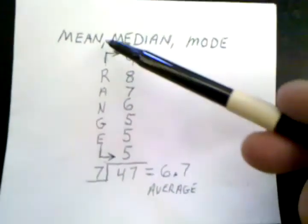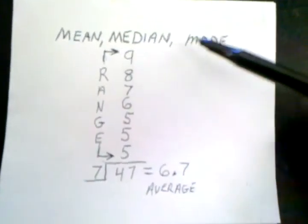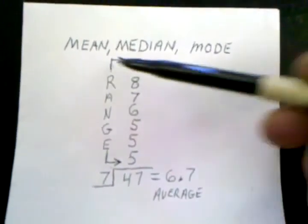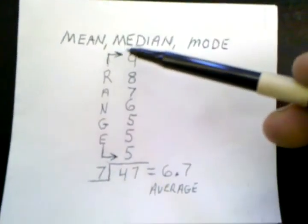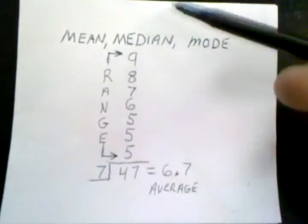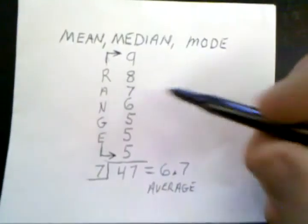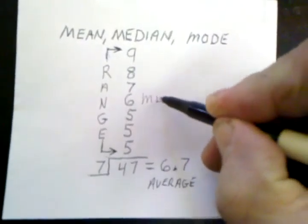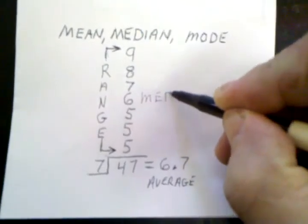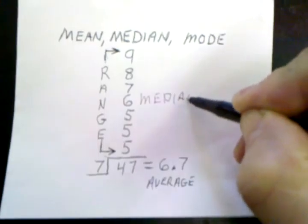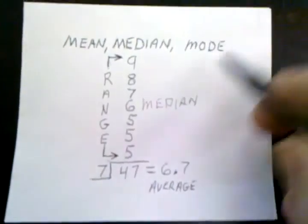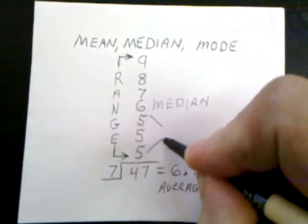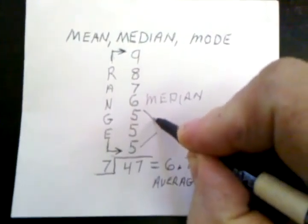In statistics you have mean, median, mode, and range. The median in a group of numbers would be the middle number, and the mode is the one that occurs the most.